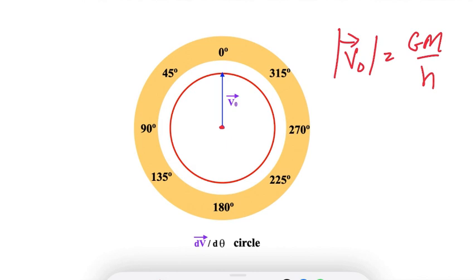So using the dv/dθ circle in the context of a circular orbit is a rather trivial exercise, because it's going to tell us what we already know.